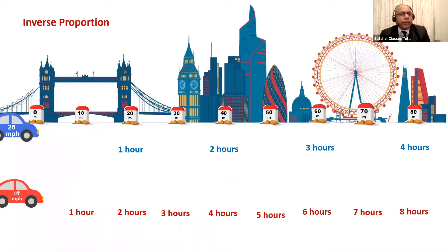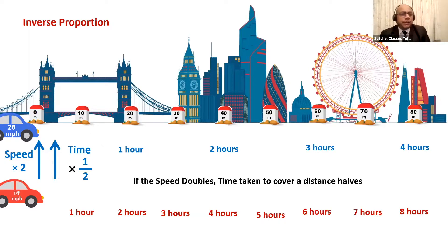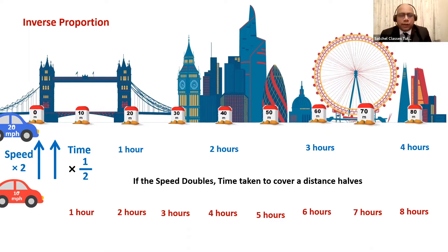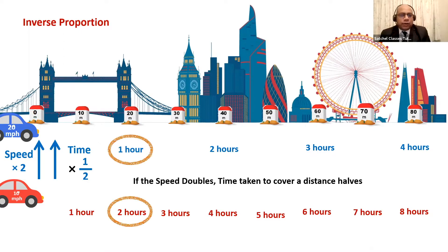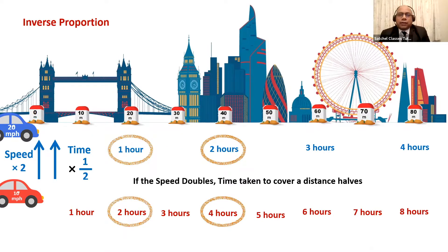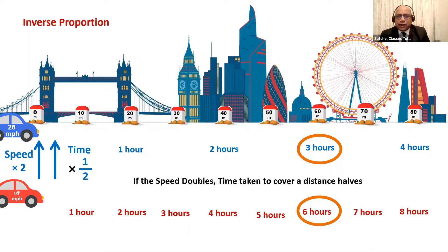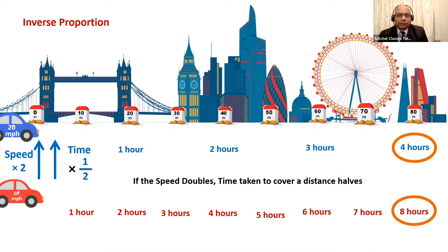Looking at the speed example again: from the red car to the blue car, speed has doubled — from 10 mph to 20 mph. So the time taken by the blue car is half at every instance. The distance the red car covers in two hours, the blue car covers in one hour. The red car's four hours, the blue car covers in two hours. Six hours becomes three hours; eight hours becomes four hours. So these two quantities are in inverse proportion.